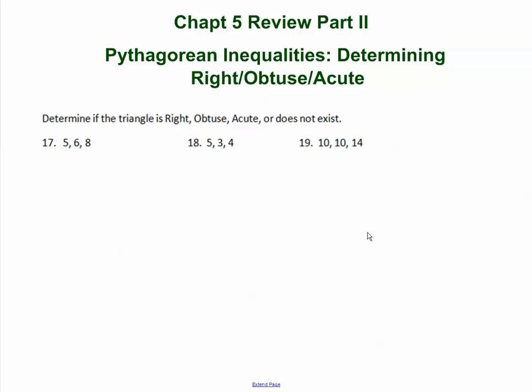Alright, my pen seems to be working for now anyway, so I'm going to make this as short and quick as possible. We're going to look at the Pythagorean inequalities in relation to determining if a triangle is right, obtuse, acute, and even if it exists.